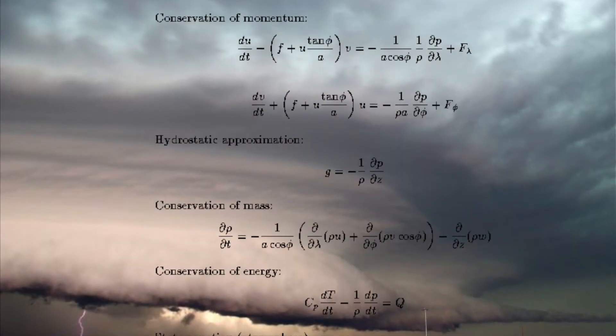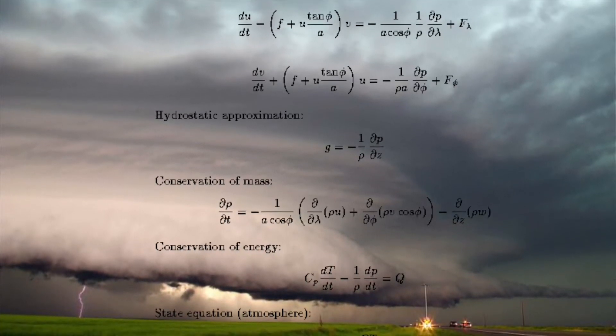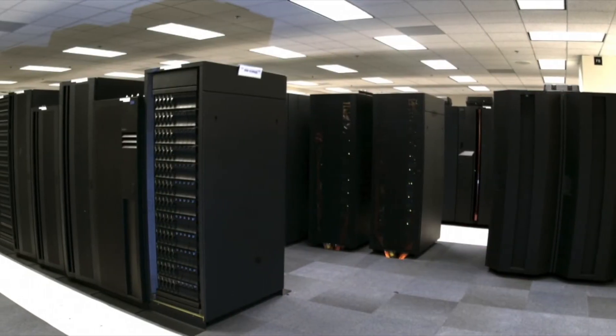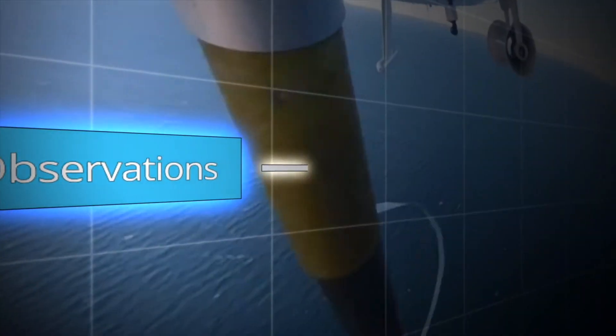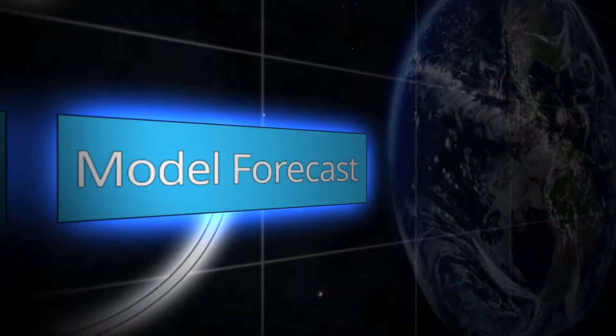So we have to use those observations together with our physical understanding. How we do that is with complicated equations — there's math and physics involved, and we use something called the equations of motion. The idea is really that we're trying to fill in those gaps between the observations of what's happening in the atmosphere. We use all those data together in computer software on really big computers, combining the observations and the equations, and then we try to step it forward in time to see what's going to happen next to make predictions.